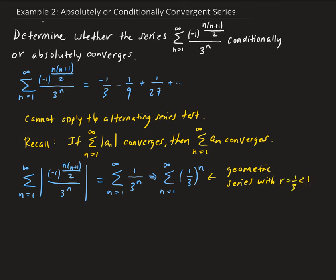And so therefore, since r is less than 1, this is converging. So what this tells us is that because we took the absolute value of the nth term and came up with a series that converges, therefore, the original series converges.